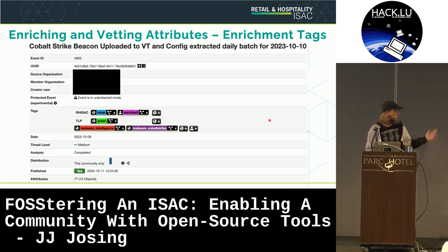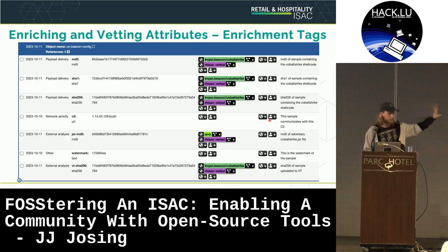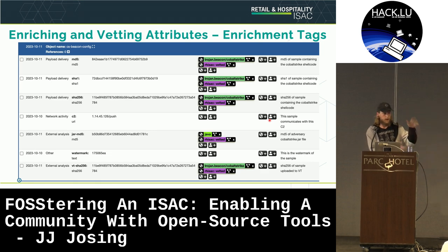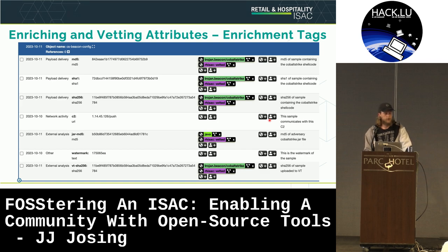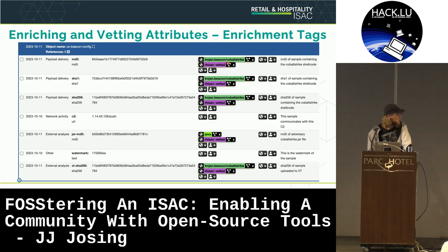Here's what this looks like in practice: CobaltStrike beacon config uploaded to VirusTotal, config extracted. We have one member that pulls down CobaltStrike samples, extracts the configs, and sends them to us. We use the csbeaconconfig MISP object to group these together and keep context. They can share anywhere from five to ten different MISP objects in one share — rather than five to ten different events, we use the object to group them all together. You can see file hashes with popular threat classification labels from VirusTotal: Trojan, BeaconCobaltStrike, Java, and so on.